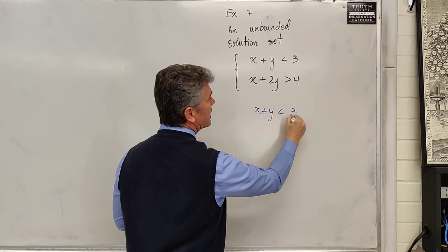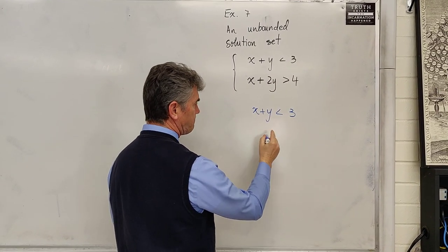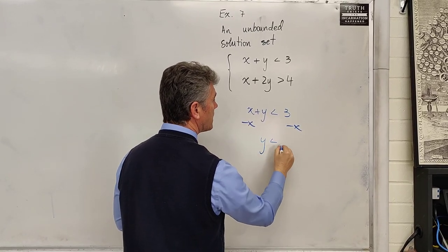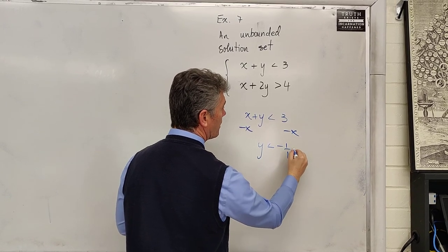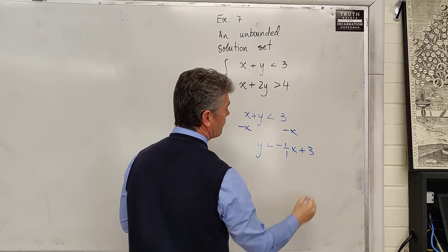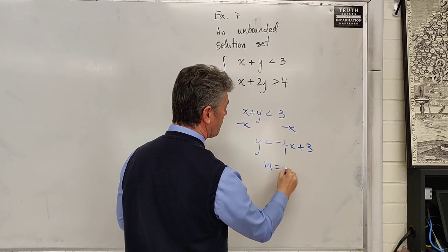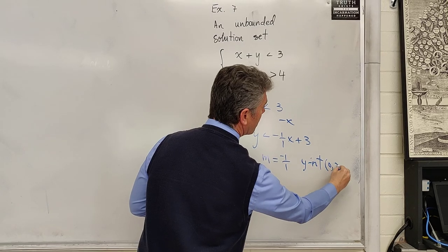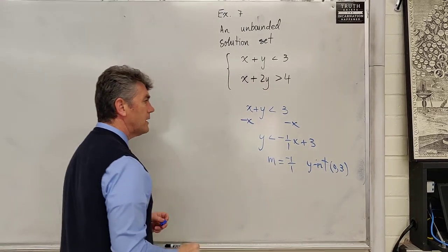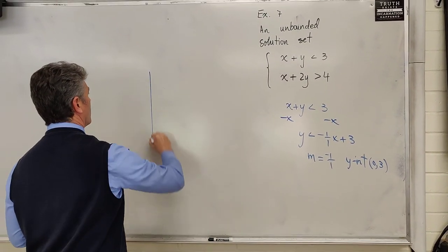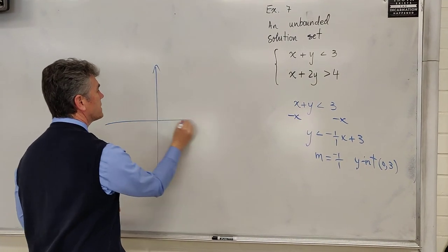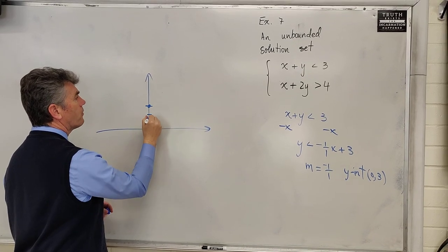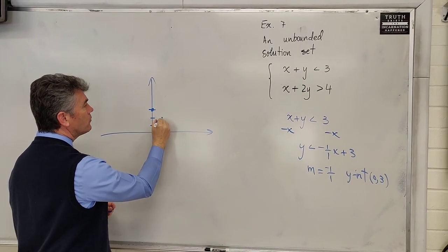So x plus y is less than 3. You already graphed this. Subtract x from both sides. Y is less than negative 1 over 1x plus 3 once more. Slope is negative 1 over 1. Y intercept is the point 0 comma 3. Draw the y-axis, draw the x-axis. Plot the point 0 comma 3. Go one down and one to the right.